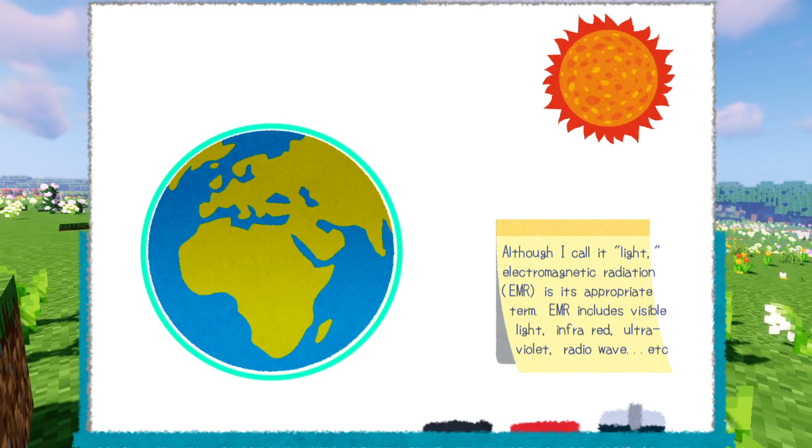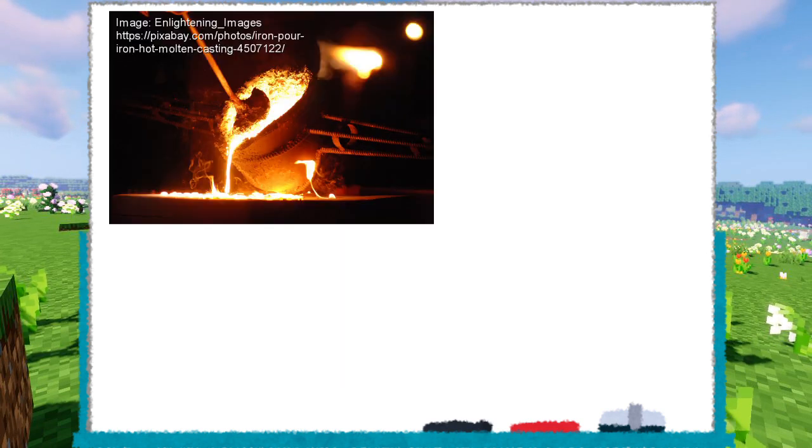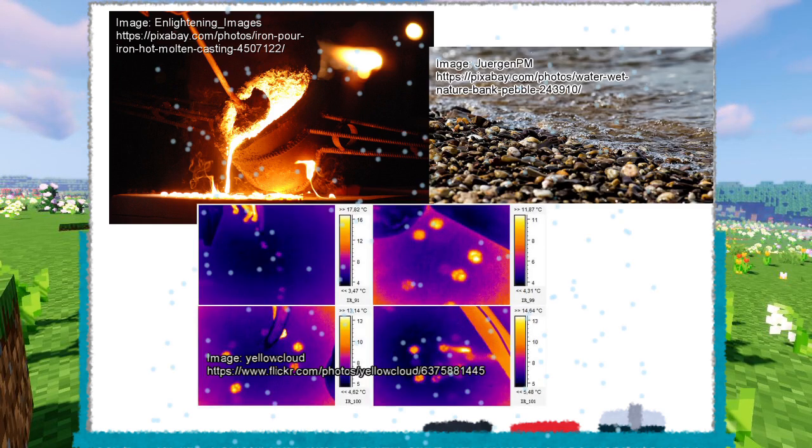But the sun is not the only thing that's emitting light. Just like how hot metal glows red, a rock, a living thing, even the air, and everything else also faintly glows.